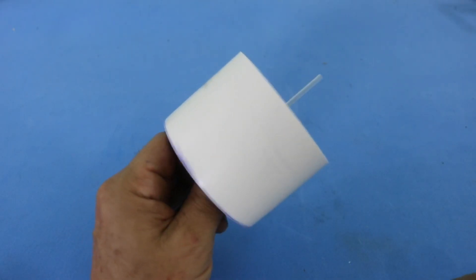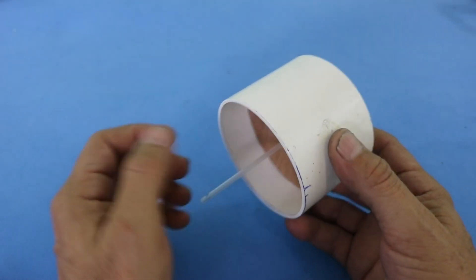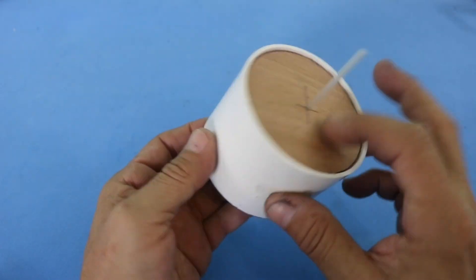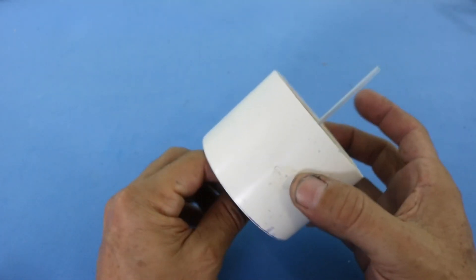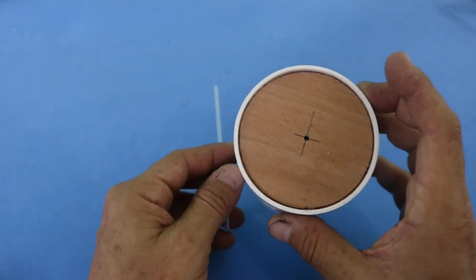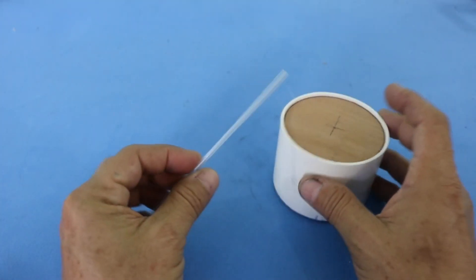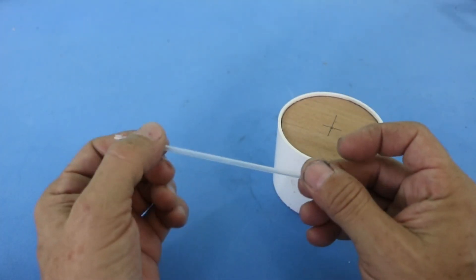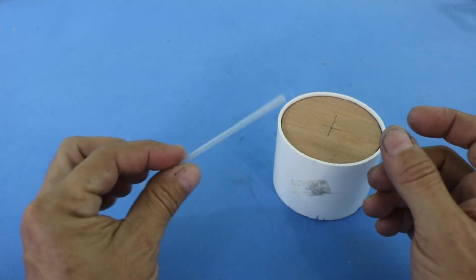The rotor is a PVC pipe with two caps made of wood, and they have a hole in the center where this plastic tube is inserted. This is from a pen.